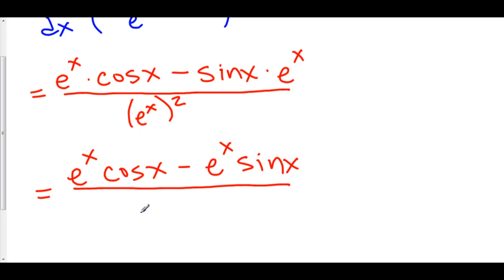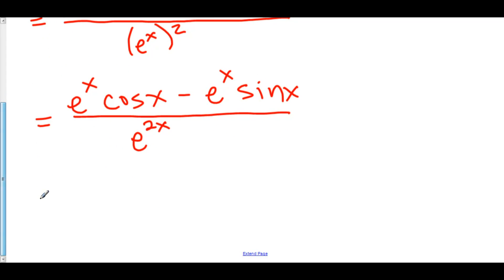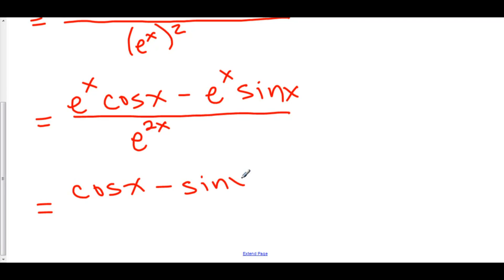Since we multiply the exponents, I could actually just divide everything by e to the x, which might make things look a bit nicer. So here we have cosine of x minus sine of x, all over e to the x. And that is the derivative.